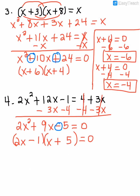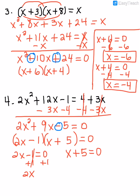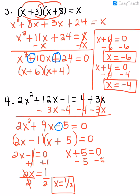Now that I have the correct factors, I take each factor, set it equal to 0, and solve. So I have 2x minus 1 equals 0 and x plus 5 equals 0. For 2x minus 1, I add 1 to both sides and divide by 2, giving x equals 1/2 for one solution. Then I subtract 5 from both sides, giving x equals negative 5.